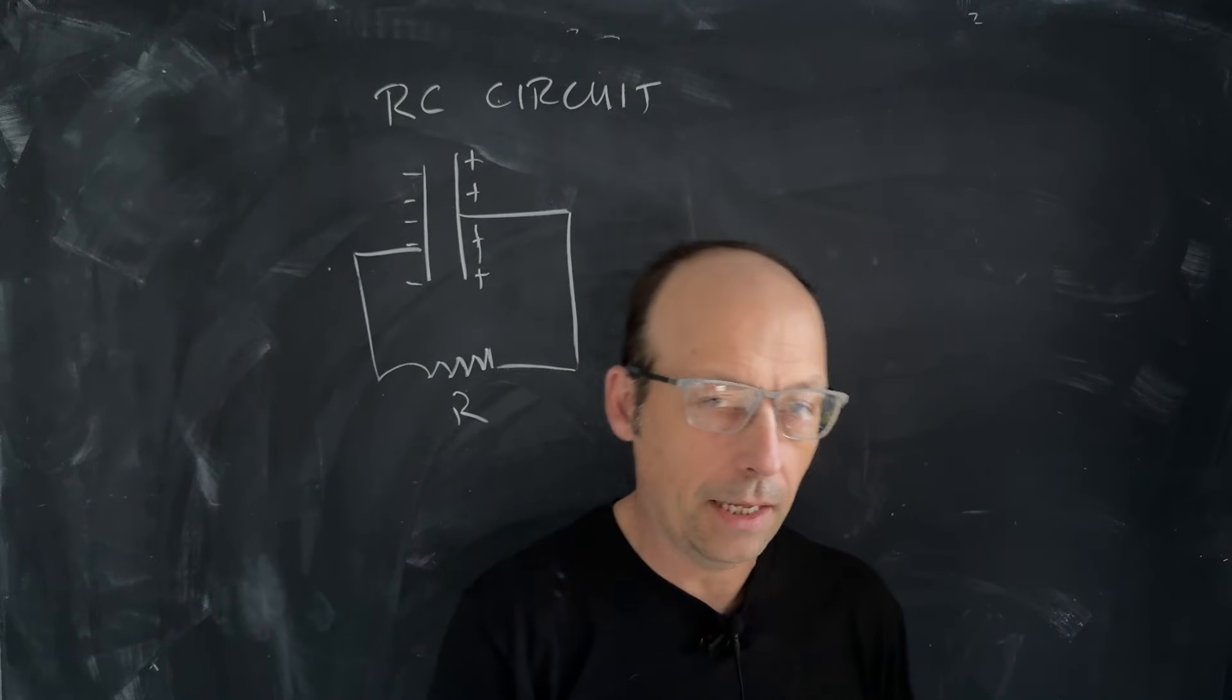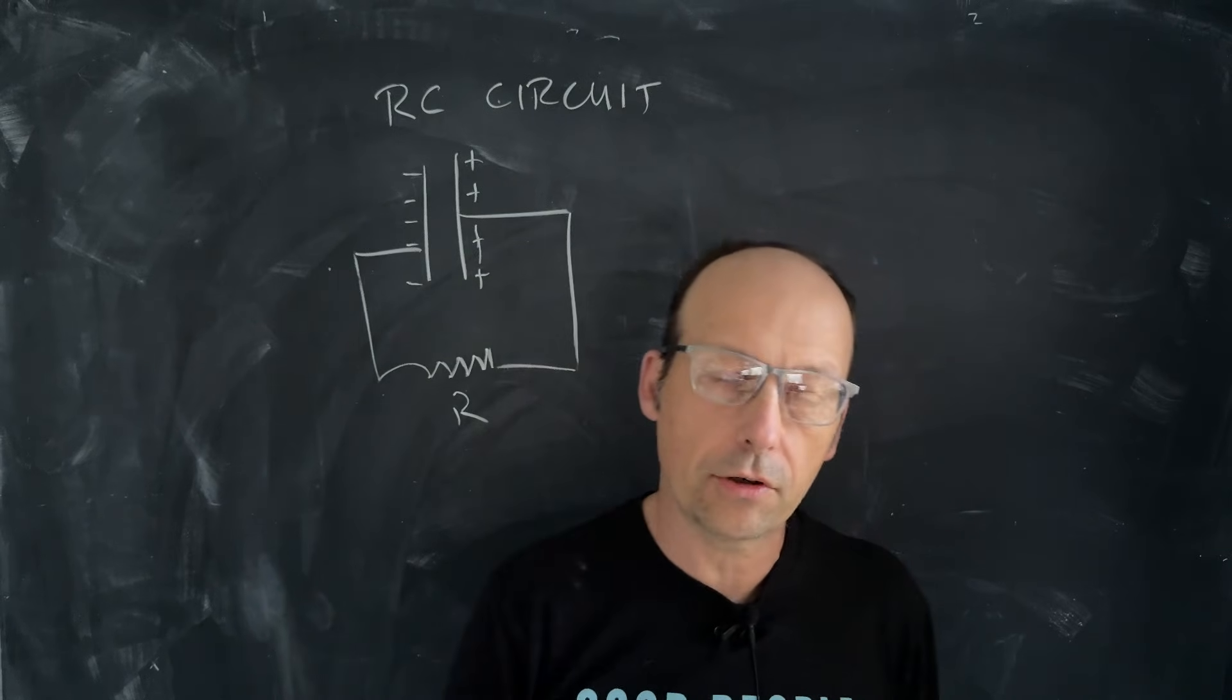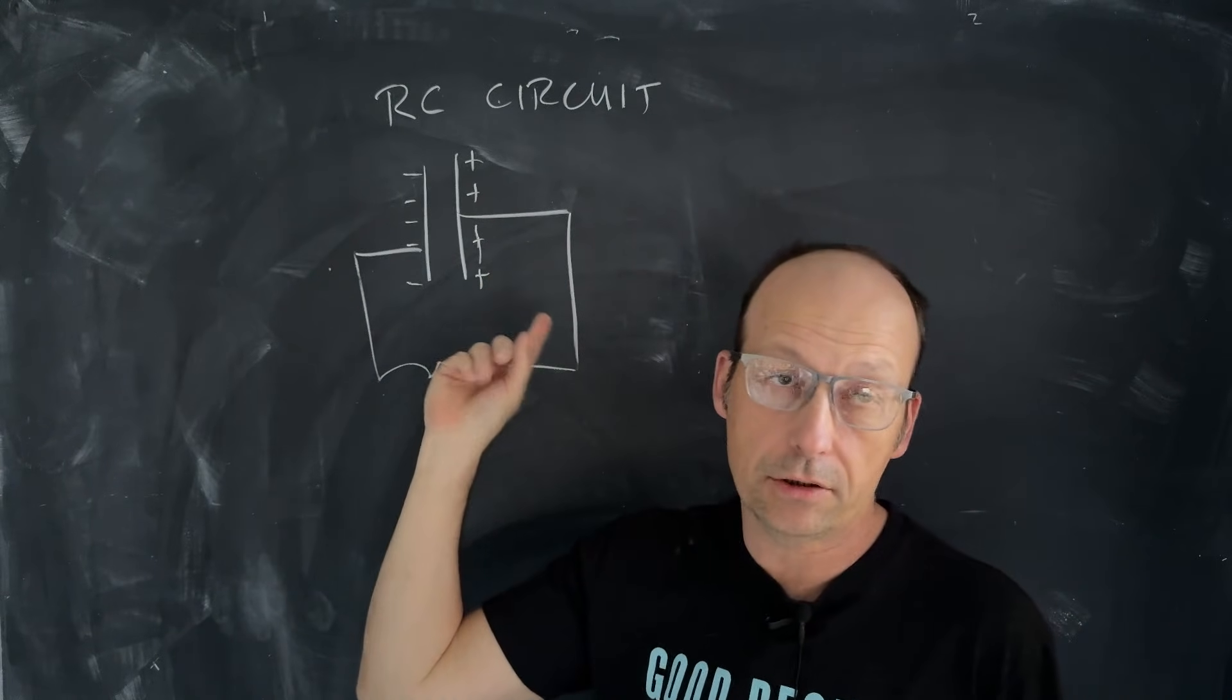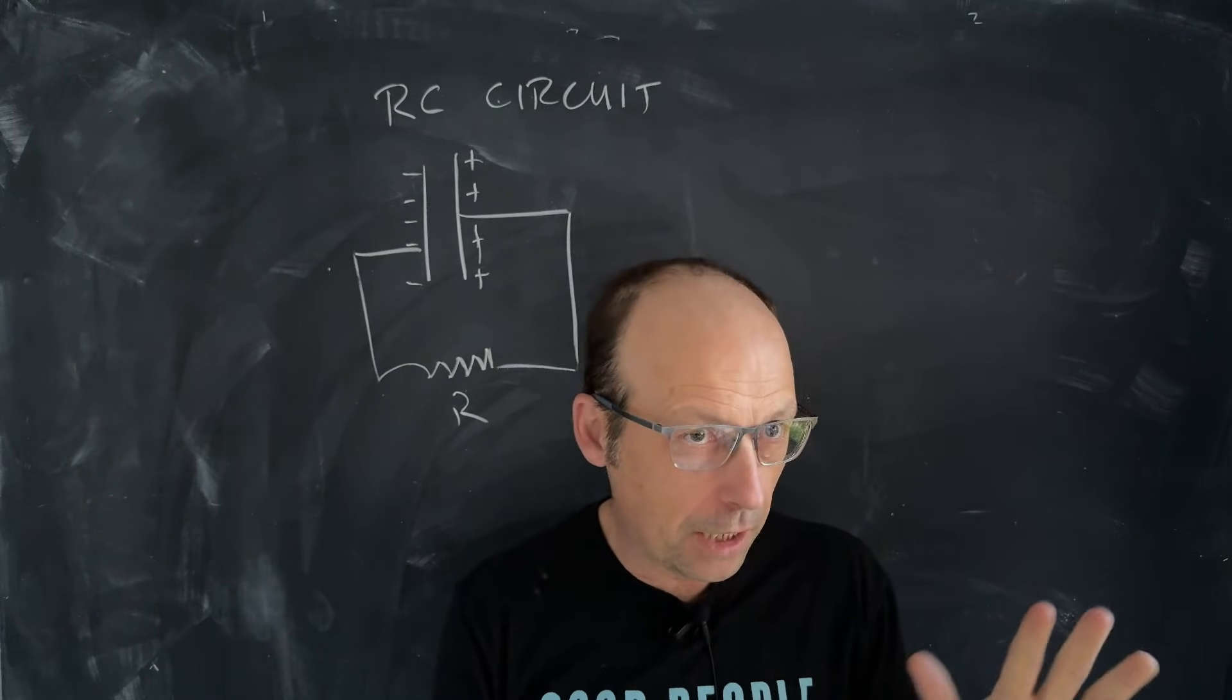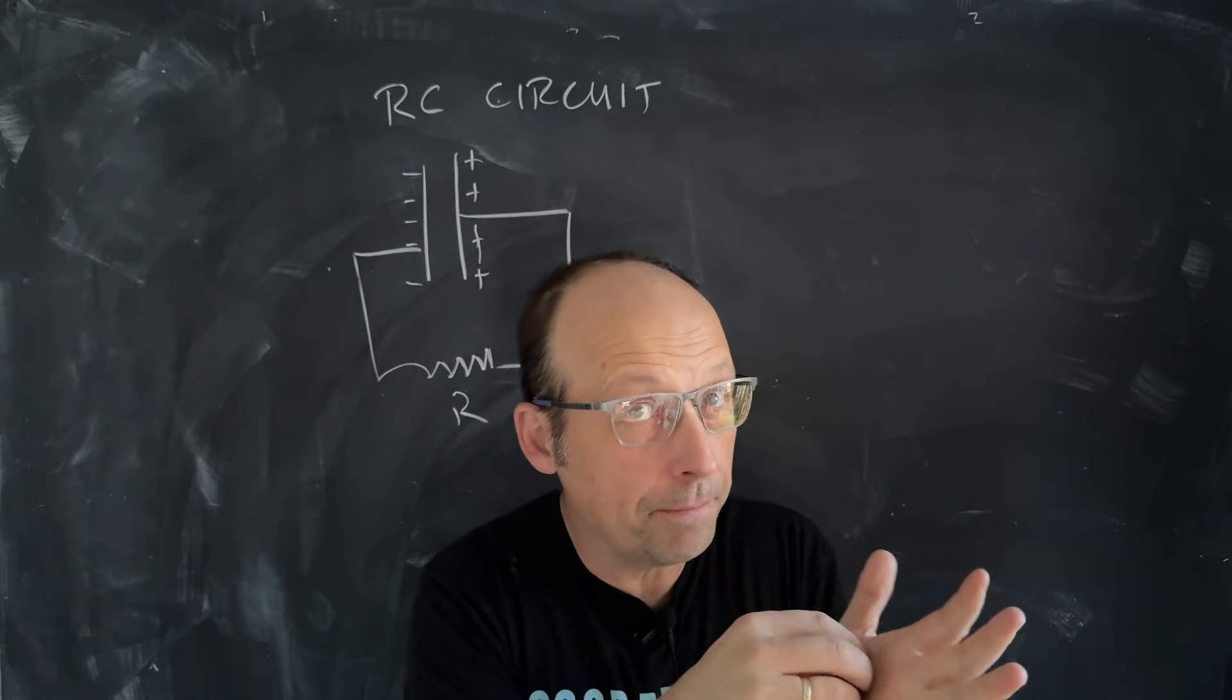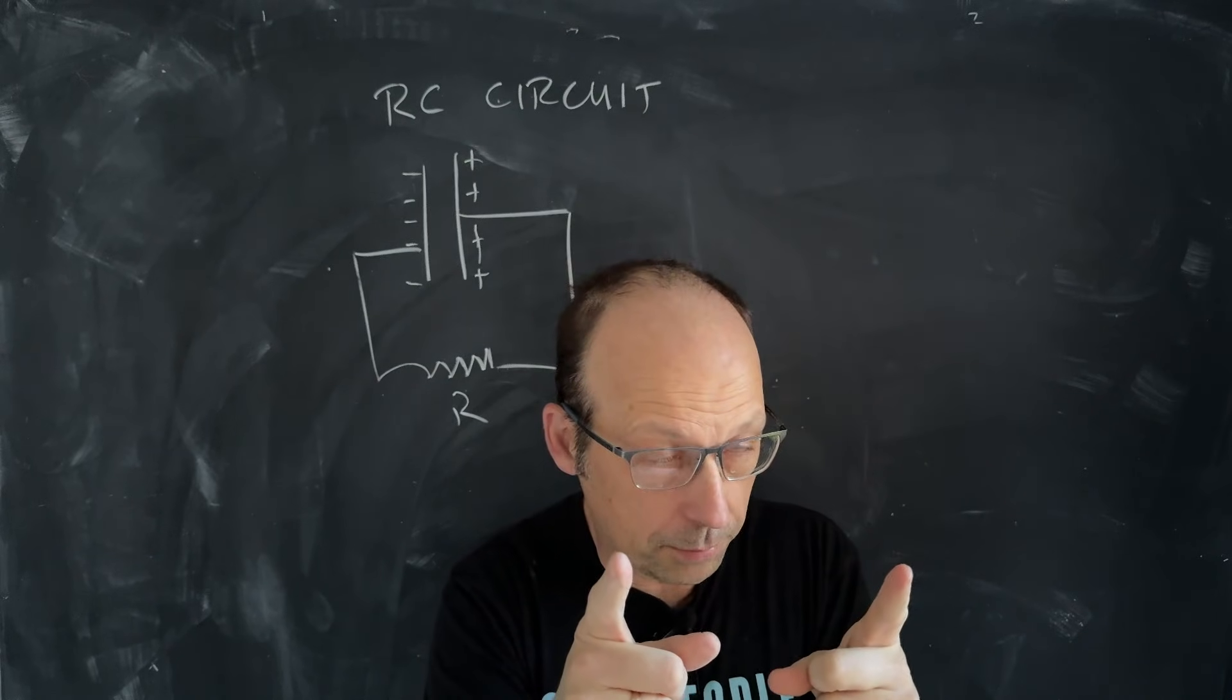In a previous video, I said I'll do RC circuits. I'm going to derive a discharging capacitor through a resistor, which is the simplest case. If you want to do charging with the battery in there too, it's about the same thing, but for introductory level, I think this is fine. And then I'm going to do it in Python and change up things a little bit to show you how to do it in Python because that's pretty cool.